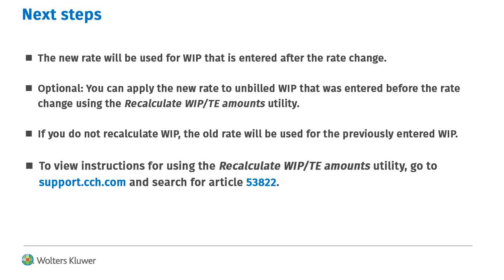The new billing rate will be used for new WIP entered for this staff member after the rate change. If you want to apply the new rate to unbilled WIP entered before the rate change, you can recalculate WIP amounts with the utility listed here. Otherwise, the old billing rate will be used for the previously entered WIP.